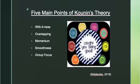The five main points of Kounin's theory include with-it-ness — a teacher who has the ability to effectively manage their classroom at all times. The teacher can usually spot problems before they happen. Overlapping is the ability to tend to more than one matter at a time, using body language, your position in the classroom, facial expressions, and hand gestures.